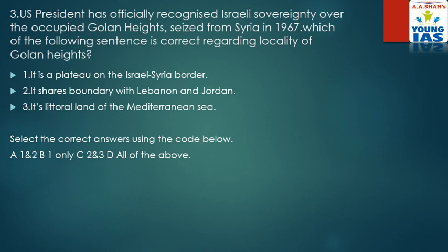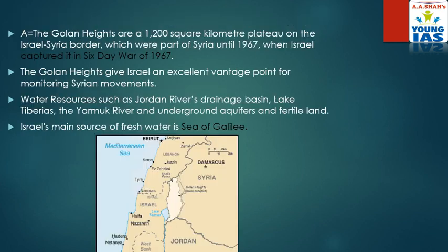This question is important because though India has a good relationship with Israel, it has still been in favor of Palestine when it came to the consideration of Jerusalem. The Golan Heights are a 1,200 square kilometer plateau on the Israel-Syria border. It shares a boundary with Lebanon and Jordan. Nearby is the Sea of Galilee and the Mediterranean Sea.